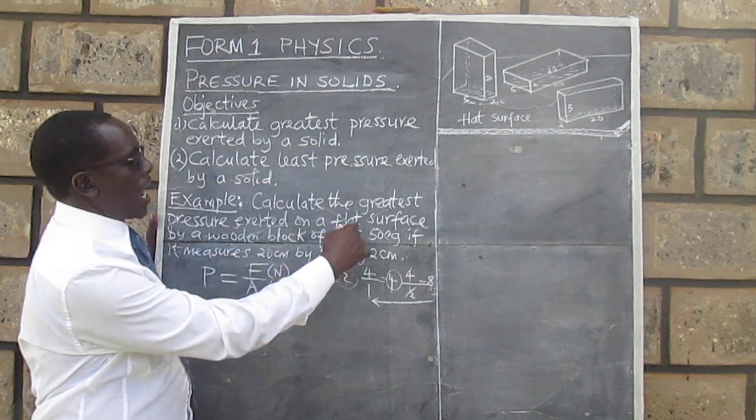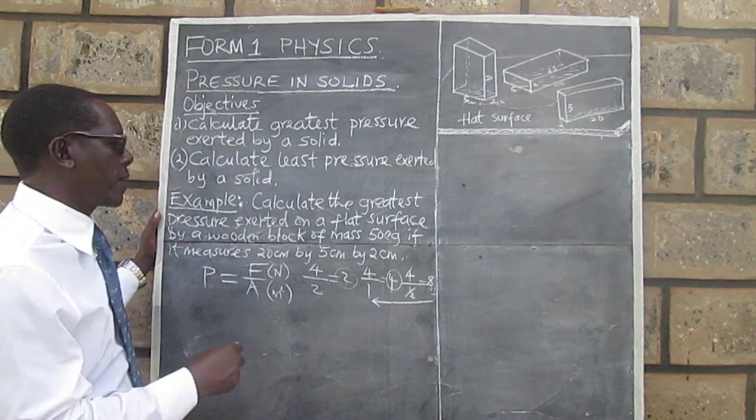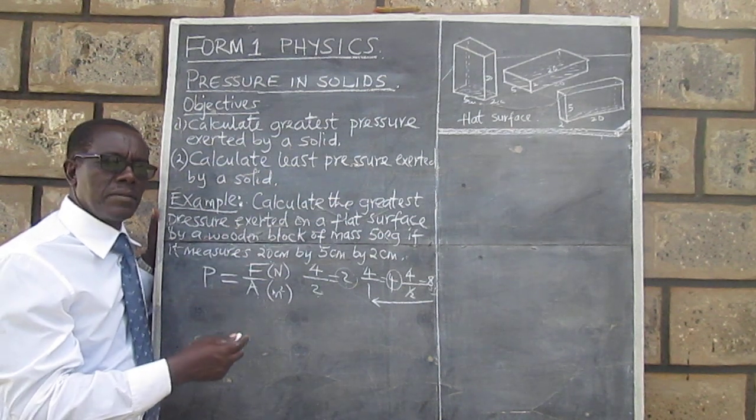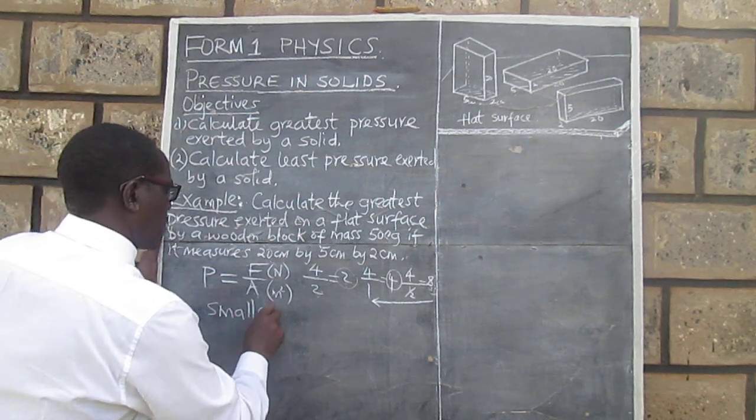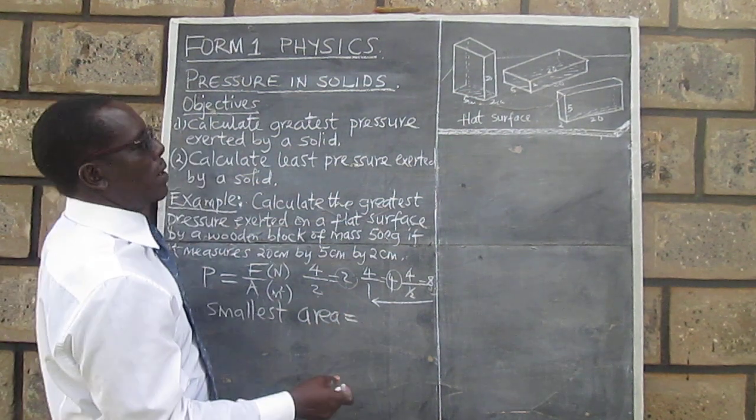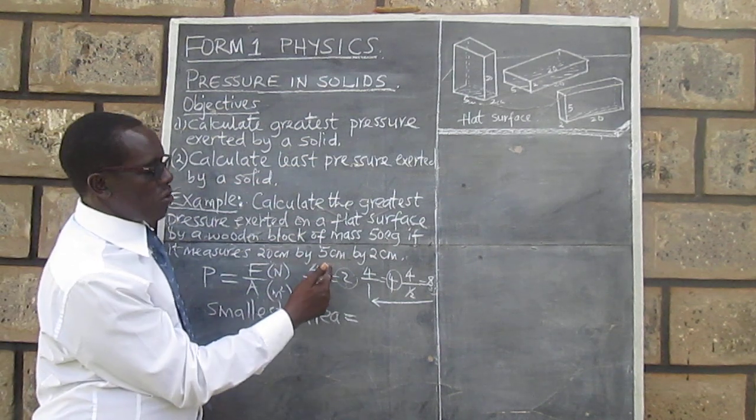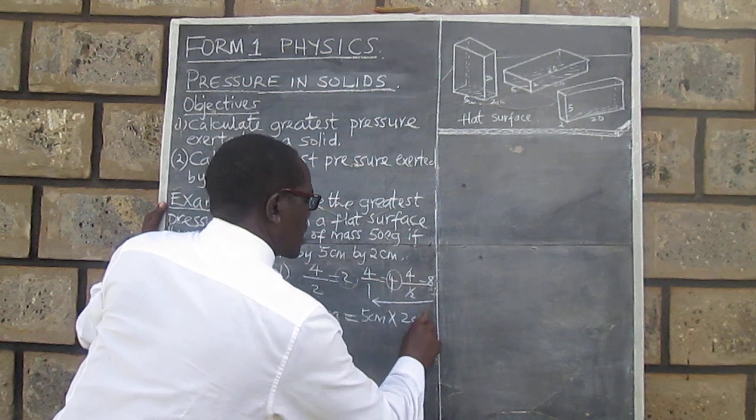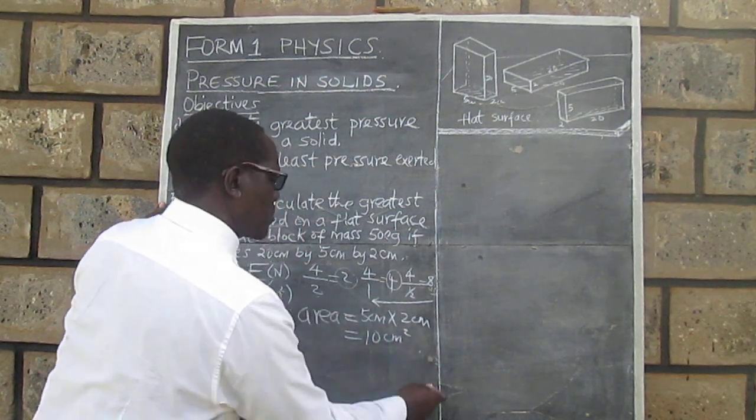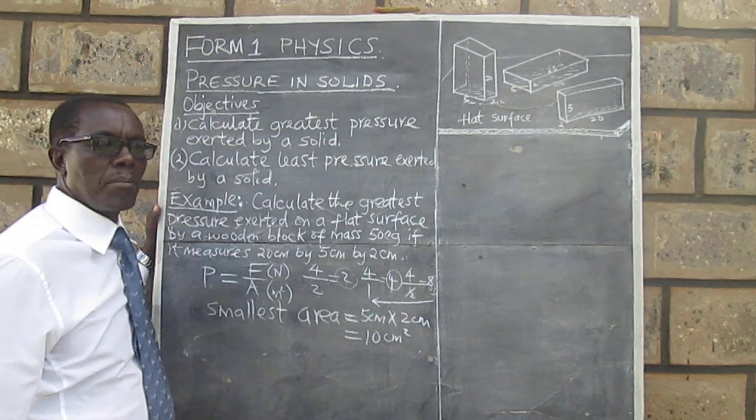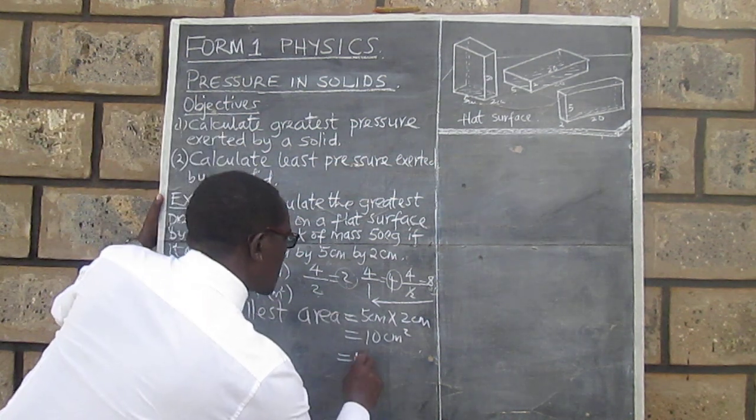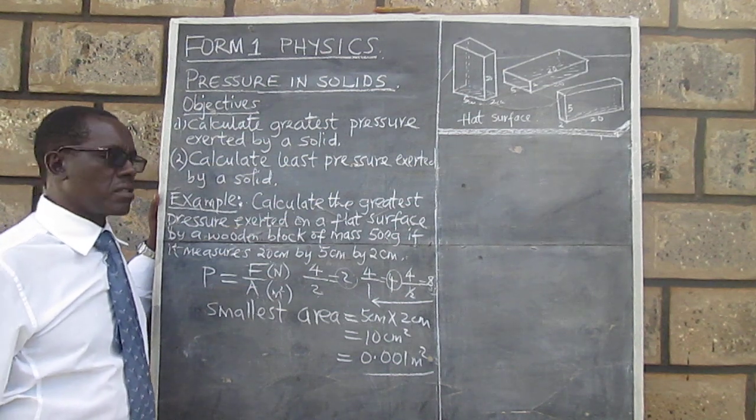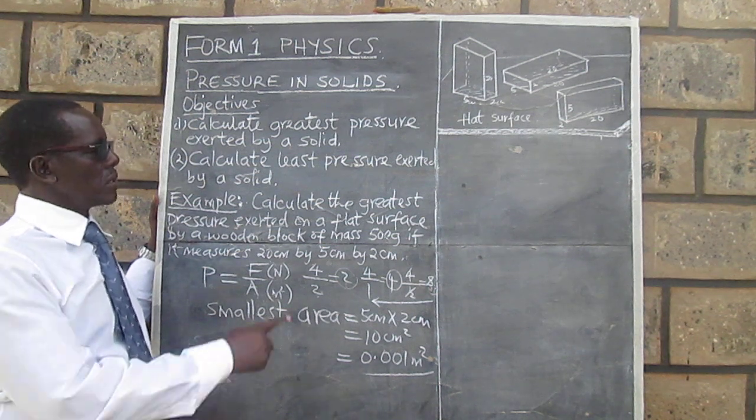We can therefore now answer our question. We get the greatest pressure, and we've said for that one we need the smallest area. So we need to work out the smallest area. From our solid, the smallest area is got when we multiply 5 by 2 cm, so it's 5 cm times 2 cm. This gives us 10 square cm. We can convert that to square meters by dividing by 10,000, and that gives us 0.001 square meters.